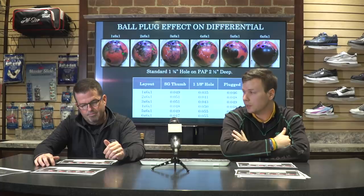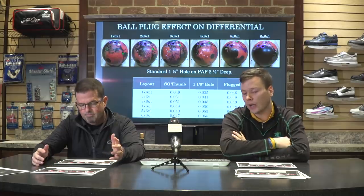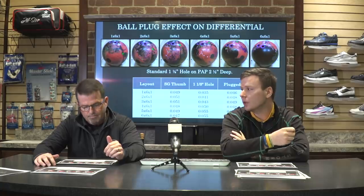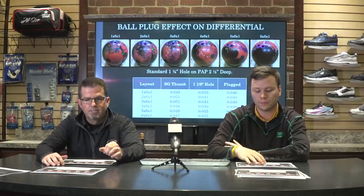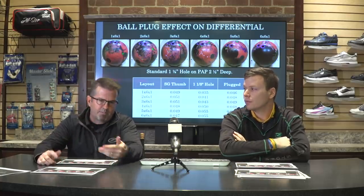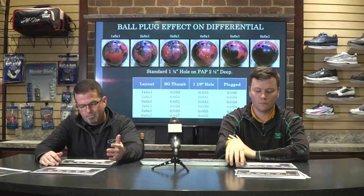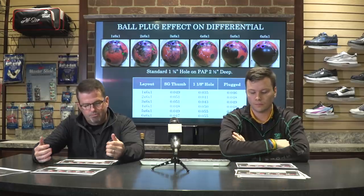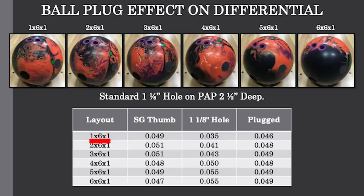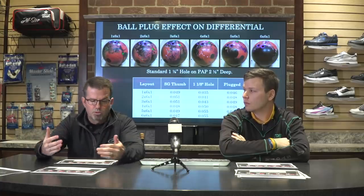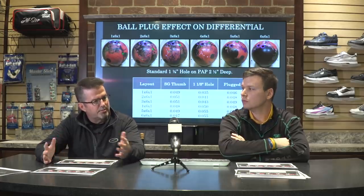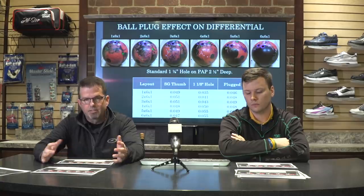That trend is pretty consistent across all of them, and it has to do with the density of the ball plug versus the average density of the materials used to construct the bowling ball. Ball plug is consistent from top to bottom of the hole, but when we drill through a bowling ball we go through different layers, materials, and densities. The big takeaway is: if we look at that one by six by one — that one-and-an-eighth balance hole was put in there to decrease differential, change ball reaction, and take some flare away. But when we plug that balance hole back up, the flare is going to come back.